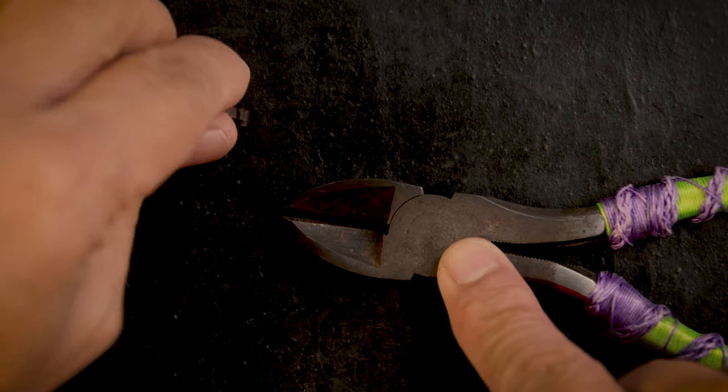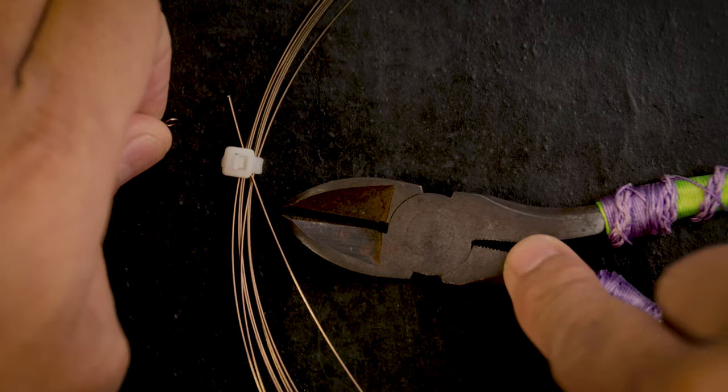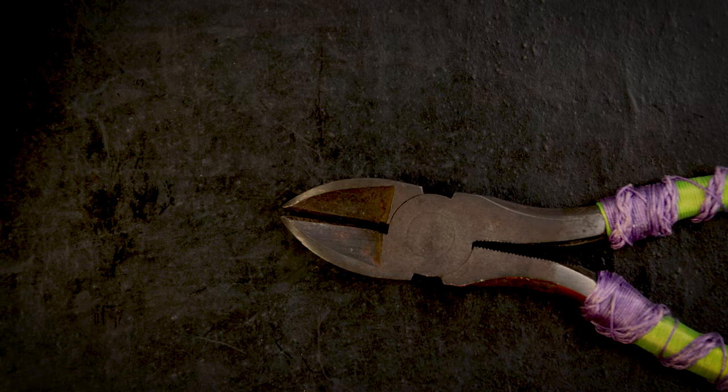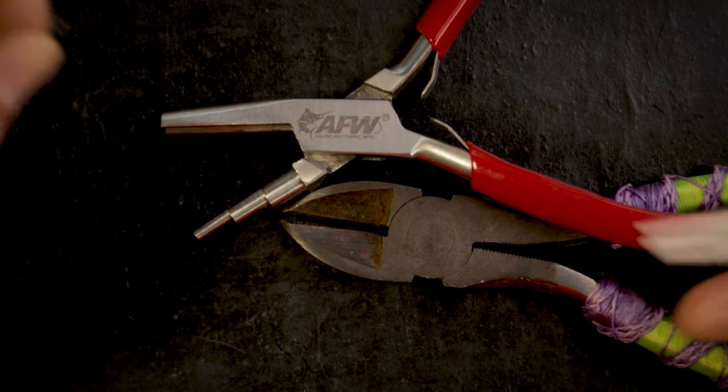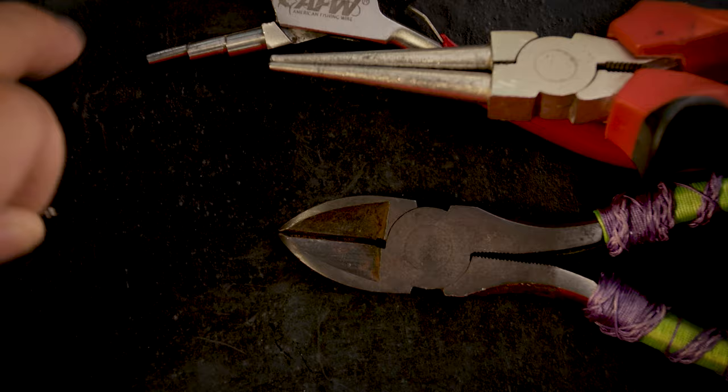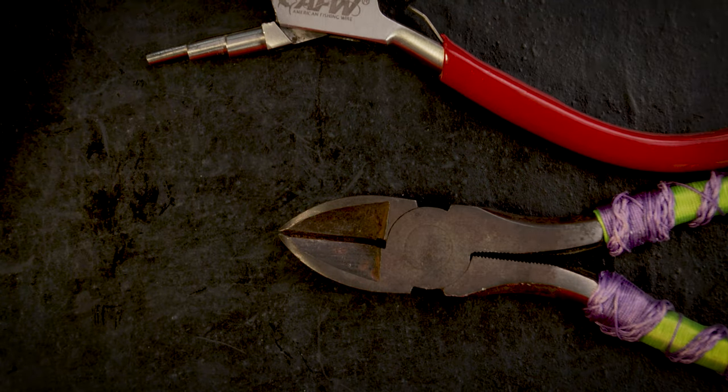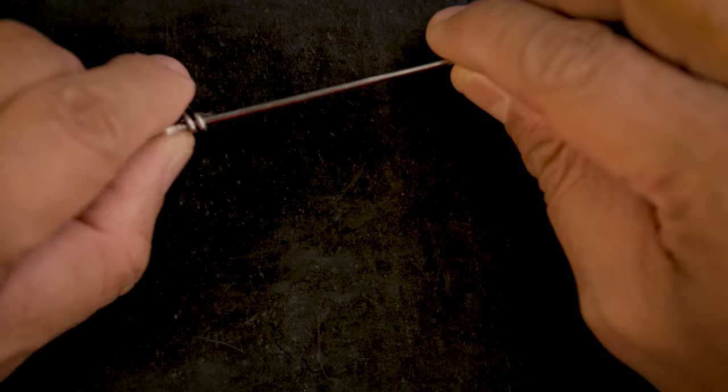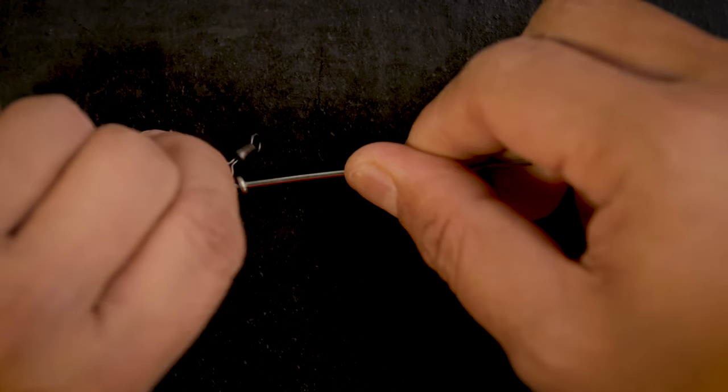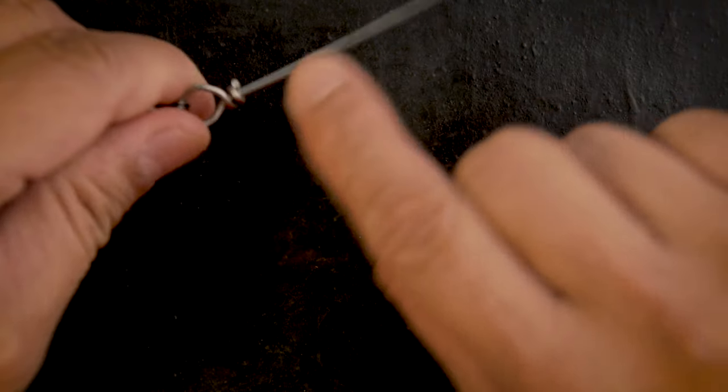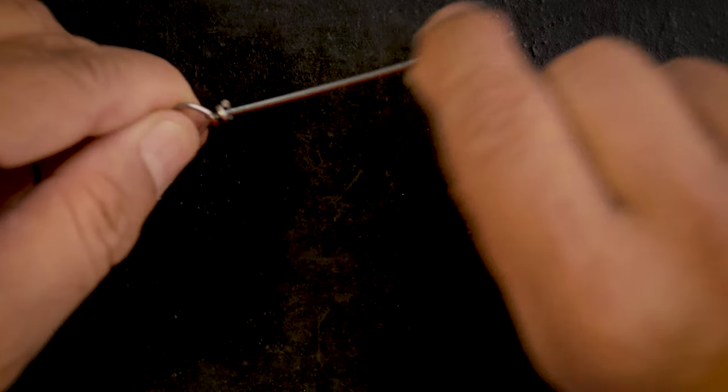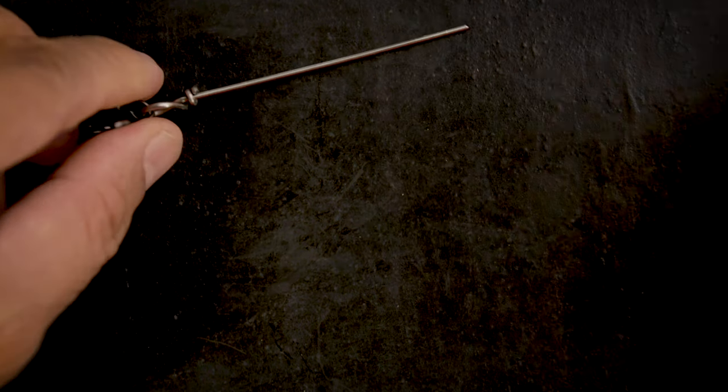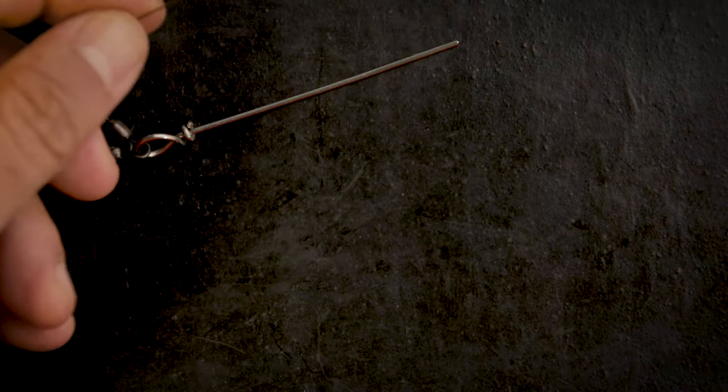Alright, so you will need some wire, something to cut the wire with. There are optional tools like this eye tool or round nose pliers. You will need thick wire and I'm using something - I believe this is about 600 or 700 pound wire here. This is number seven right here.